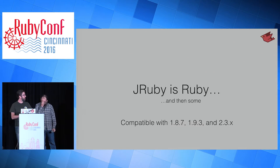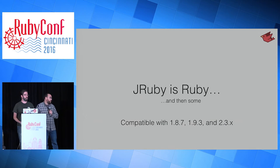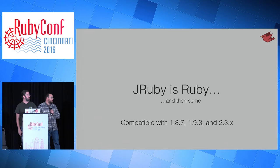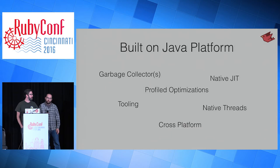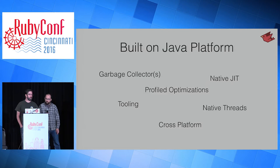JRuby is Ruby, but it does a lot more than that. It's JRuby on the JVM, it has access to libraries, and we have versions compatible with 1.8, 1.9, and 2.3, although we're mostly focusing on the current version now, 2.3 and 2.4. It's built on top of the Java platform, so a lot of the issues you typically have with a CRuby application — garbage collection, threading, straight-line performance — most of those are not issues for us. JRuby almost always runs stuff faster than CRuby, sometimes a lot faster, and garbage collection is generally not a problem.